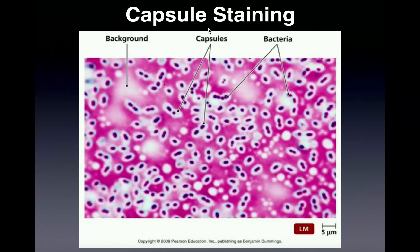That's what a capsule does — a slimy layer around the cell wall that helps them stick to things. And when you're looking at the capsule stain under the microscope, you're actually looking for something that's not stained at all. The capsule stain is what we call a negative stain because the structure of interest, which is the capsule itself, actually doesn't have any stain to it.